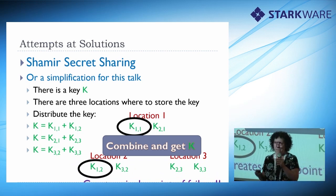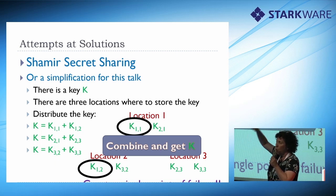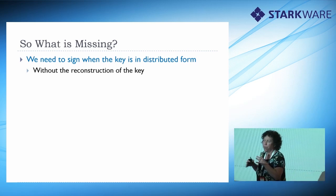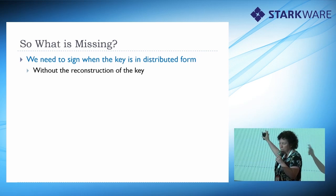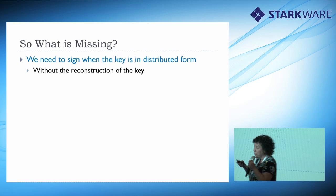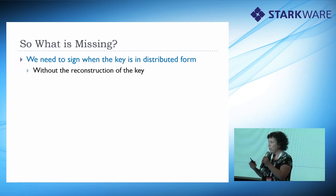However this again creates the problem of having a single point of failure. Because the minute that you combine these two K's on your computer which is online your computer can be attacked at that specific moment. And the full key is there, it's not the partial two shares. And now somebody can steal your key. Clearly this is not sufficient just distributing the secret via Shamir secret sharing or via this degenerate sharing that I said. These things are not sufficient. Because what we actually need is we need to also sign. We need to generate a signature when the key is in this distributed format and without reconstruction of the key.